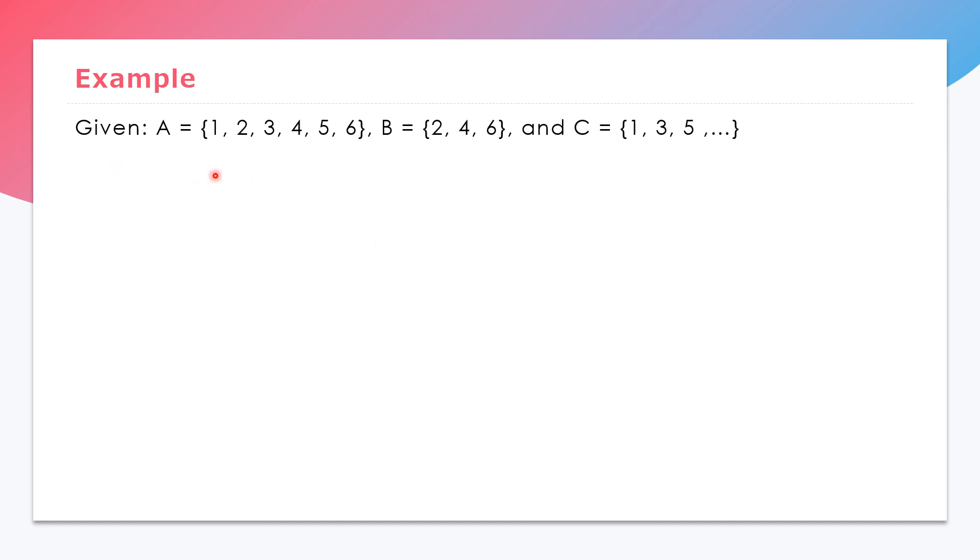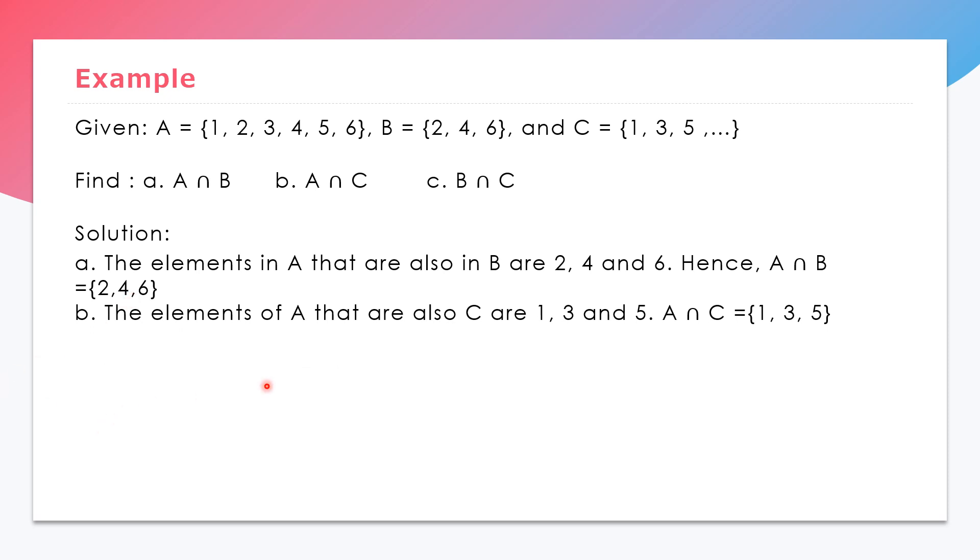Example: Given set A with elements {1, 2, 3, 4, 5, 6}, set B is {2, 4, 6}, and set C is {1, 3, 5}. First, we're going to find A intersect B, then B intersect C, and A intersect C. For the solution, the elements in set A that are also in B are {2, 4, 6}, hence A intersect B is {2, 4, 6}. The elements of set A that are also in set C are {1, 3, 5}, so therefore A intersect C is {1, 3, 5}. Examining sets B and C, we see that there are no elements common to both, so B intersect C is an empty set or null set.